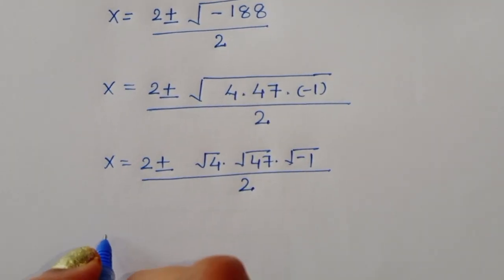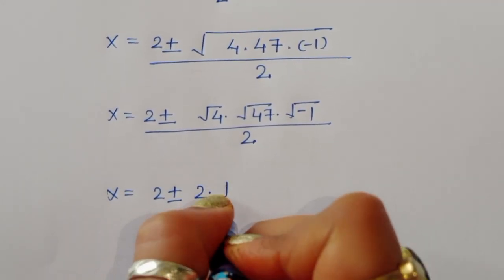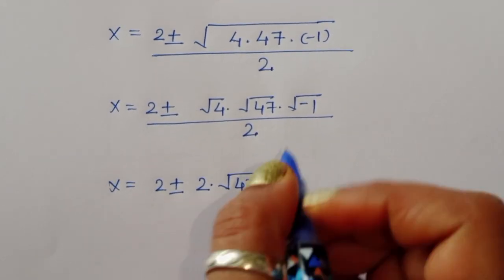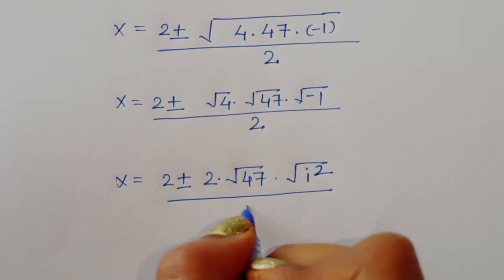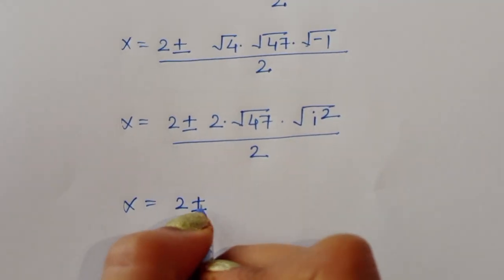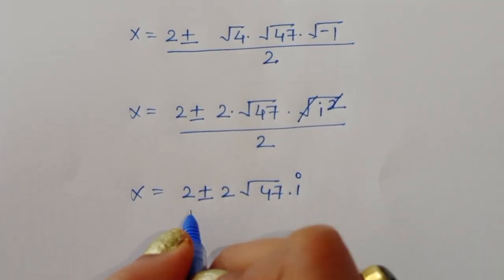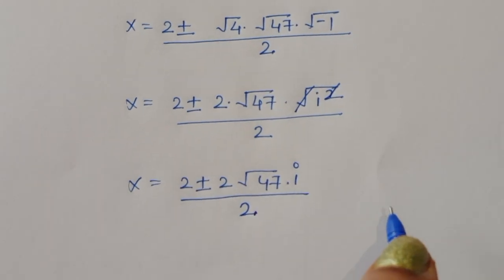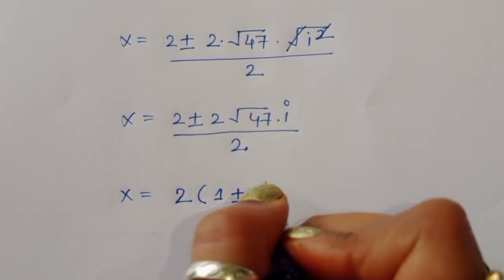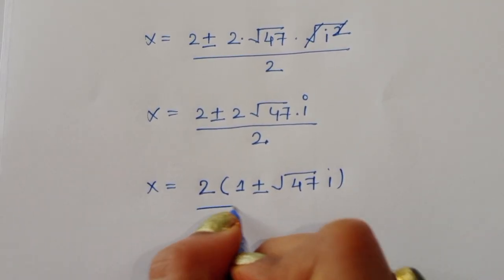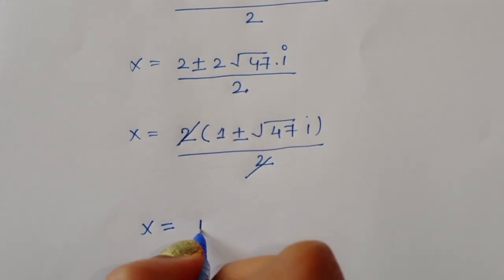We separate the terms: square root of 4 times square root of 47 times square root of minus 1. Square root of 4 is 2, and square root of minus 1 is i. So we get 2 plus or minus 2 times square root of 47 times i, divided by 2. Taking out the common factor of 2, the 2s cancel, giving x equal to 1 plus or minus square root of 47 times i.